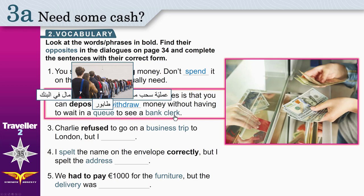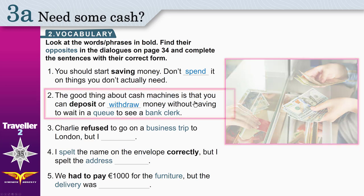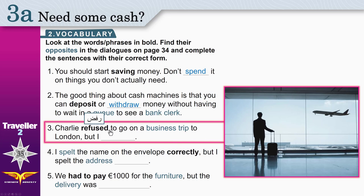A bank clerk is a person who works for the bank to help clients. This man is Charlie. He refused. When you refuse, you say no — he said no. To go on a business trip. When you go on a business trip, you travel to another city to conduct business, not for fun. To London. But what is the opposite of refused?